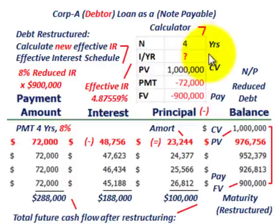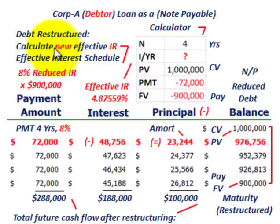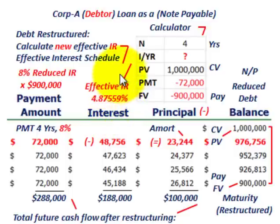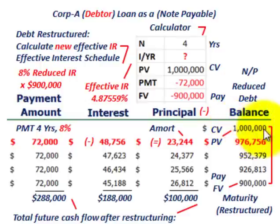On these debt restructurings, we have to come up with a new amortization schedule. We're going to calculate the new effective interest rate to amortize this notes payable. We know the original carrying amount of the note was $1,000,000, and we have to amortize that down to $900,000 at maturity, four years later.